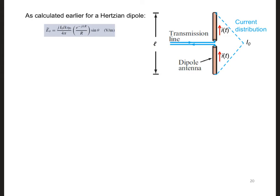To calculate the far fields of the dipole with a triangular current distribution, we will divide the dipole into infinitesimally short segments of length dz.